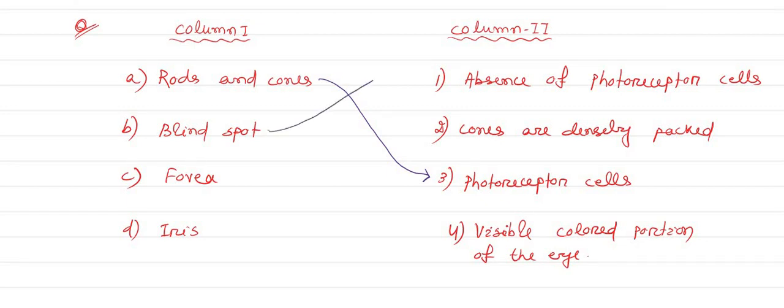That is option A. Option B matches with option 1. Now, fovea - fovea is the organ or portion which is densely packed with cone cells that is meant for color vision.